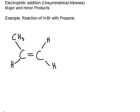What I want to talk to you about today is the electrophilic addition of unsubstituted alkenes and how we get major and minor products. The example I'm going to be using is the reaction of hydrogen bromide with propene. In this reaction, we can have two products. This is an electrophilic addition reaction.